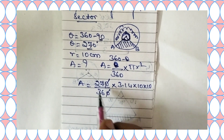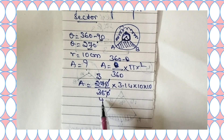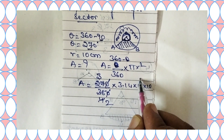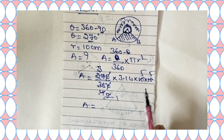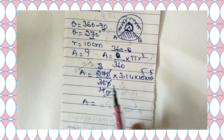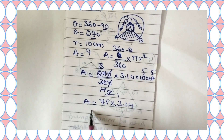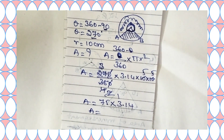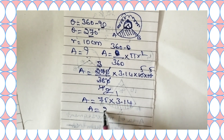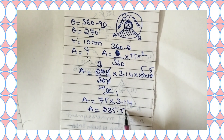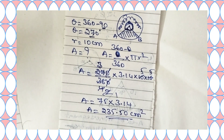Simplifying 270 by 360 gives 3 by 4, and 10 into 10 gives 100. So we have 75 into 3.14, which equals 235.50 centimeter square. So the area of the major sector is 235.50 centimeter square.